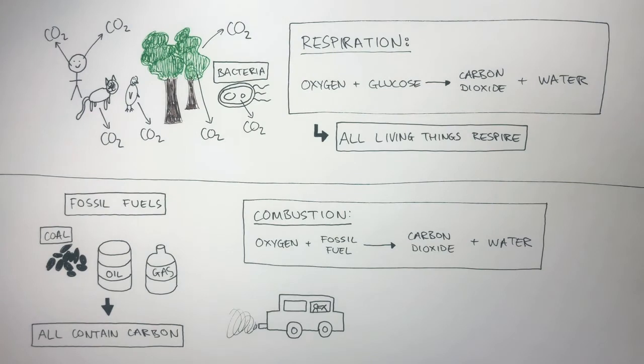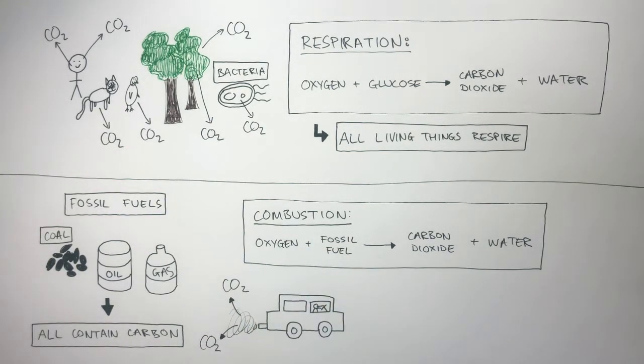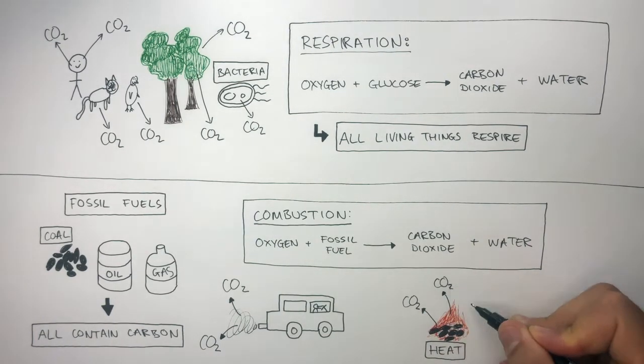So for example, this car uses petrol or diesel in its engine, and the combustion of this fossil fuel will release carbon dioxide into Earth's atmosphere. In another example, the combustion of this coal when it's being heated will also release carbon dioxide into Earth's atmosphere.